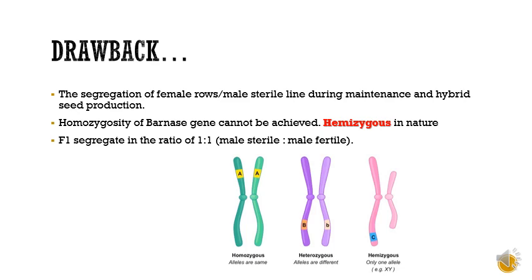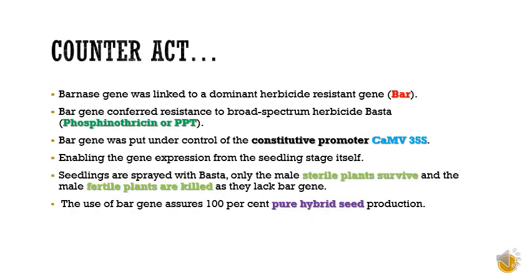Homozygous means alleles are the same; heterozygous means alleles are different; but in the hemizygous condition, only a single copy is present in an otherwise diploid organism. In order to overcome these drawbacks, different strategies have been followed.